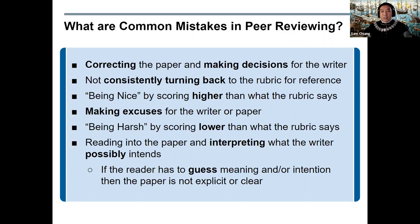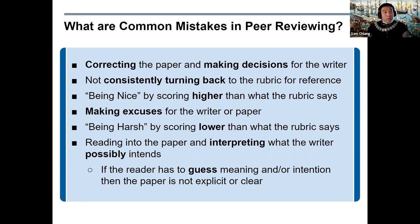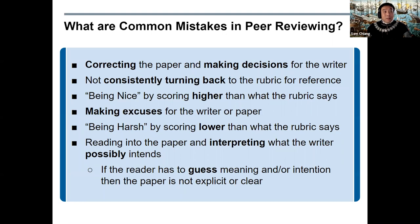Finally, an easy trap to fall into is reading into the paper and interpreting what the writer possibly intends. The fact is we don't know what the writer's intentions are, and this is the purpose of the peer review — to show the writer that they haven't pulled it out of their head and put it on the paper. A successful academic paper must deliberately, directly, and clearly lay out all its logic: all its claims, reasons, evidence, warrants, and choices must be in writing, not in the writer's head. If the reader has to guess the meaning or intention of any part, the paper is not explicit and clear enough.